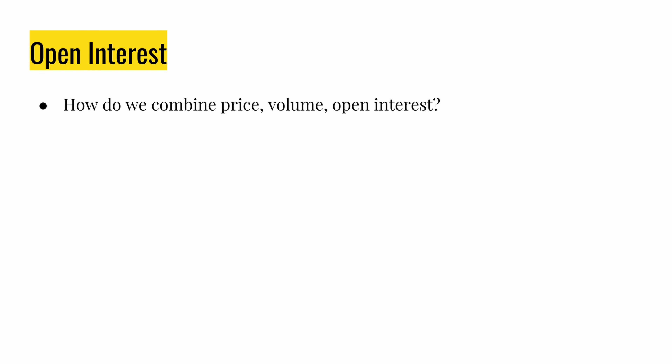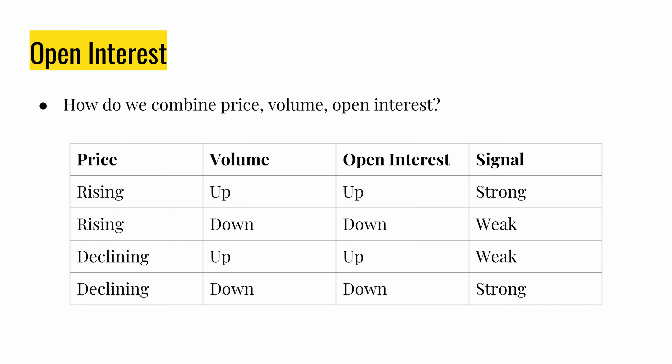If you found that a bit confusing, don't worry — you can probably get away with just knowing this. When price is rising, volume is up, and open interest is up, it's a strong buy signal. If price is rising but volume and open interest are both down, it's a weak uptrend — be wary of a reversal or topping pattern. If price is declining but volume and open interest are both up, it's a weak downtrend — watch for a reversal or bottoming pattern. Finally, if price, volume, and open interest are all declining, it's a strong sell signal.